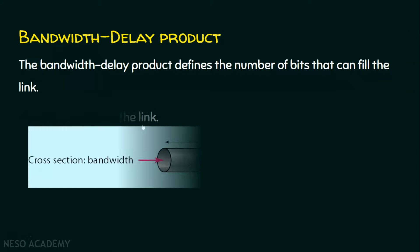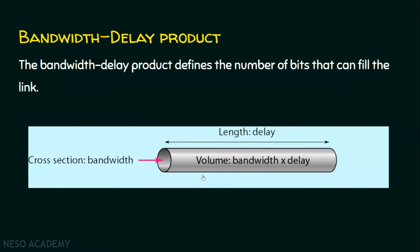Let's see an example. In this example, we are assuming the link to be a pipe. This pipe will obviously have a length and a cross section. The volume of this pipe is denoted by length multiplied by cross section. If it is a link, then the capacity is bandwidth multiplied by delay, where bandwidth is the cross section and delay is the length. So the bandwidth delay product defines how many bits can fill the link — it is the capacity of the link.